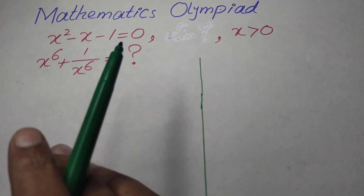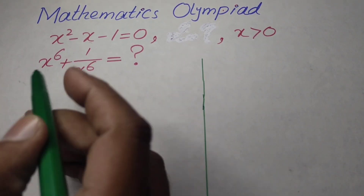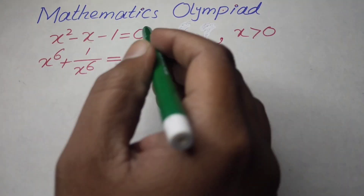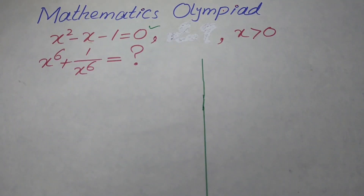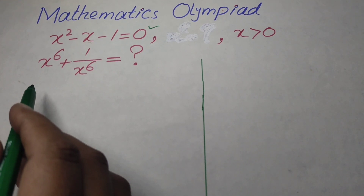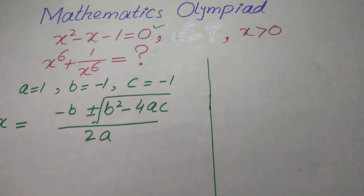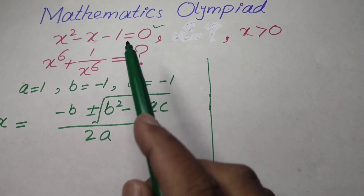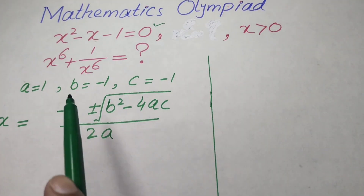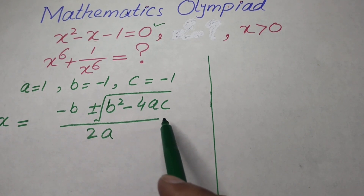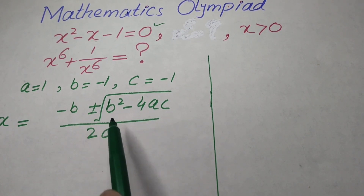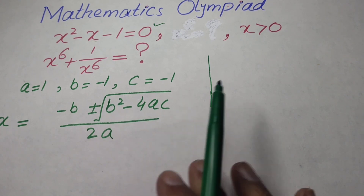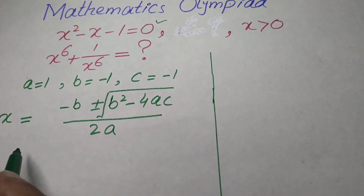Now we move toward the solution of this problem. The very first step is to apply the quadratic formula to this equation. We identify the values of a, b, and c from this polynomial. The quadratic formula is: x = (−b ± √(b² − 4ac)) / 2a.